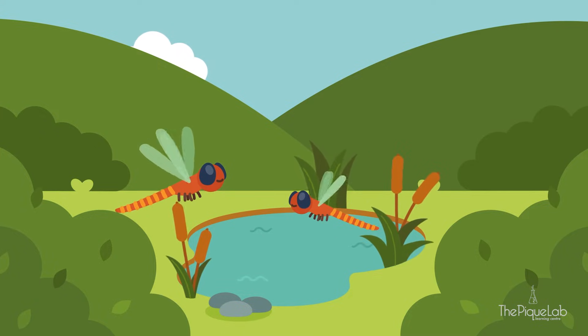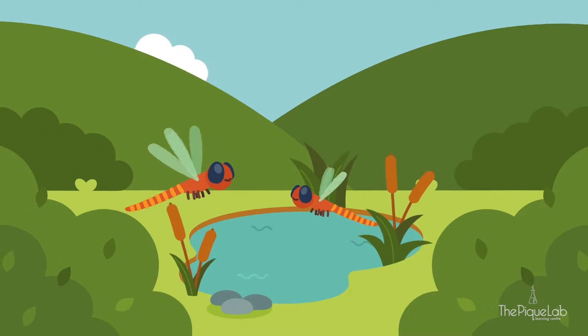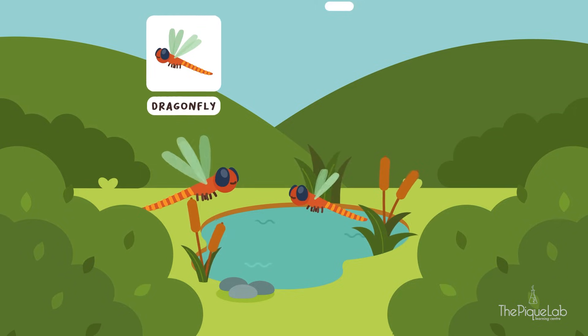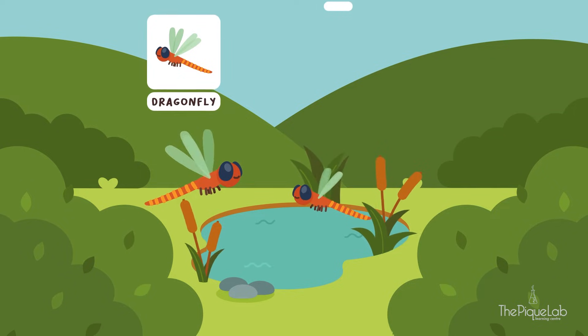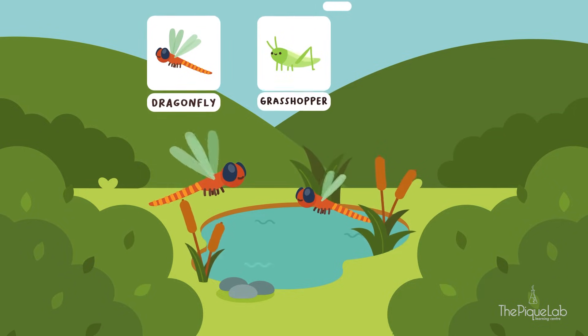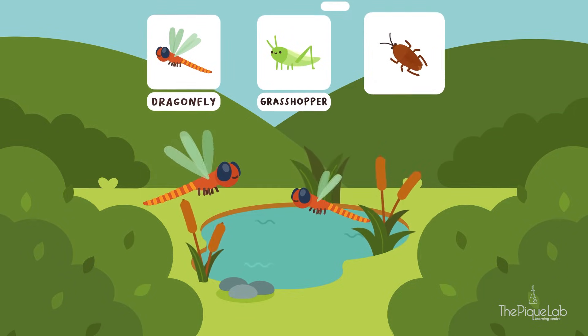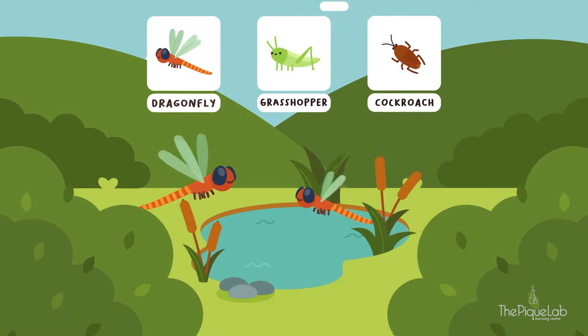Animals with this type of life cycle are some insects, like dragonflies, grasshoppers, and even cockroaches.